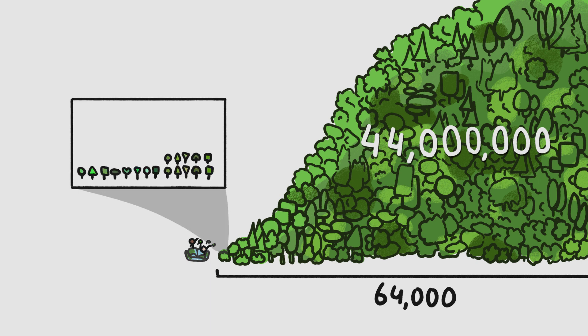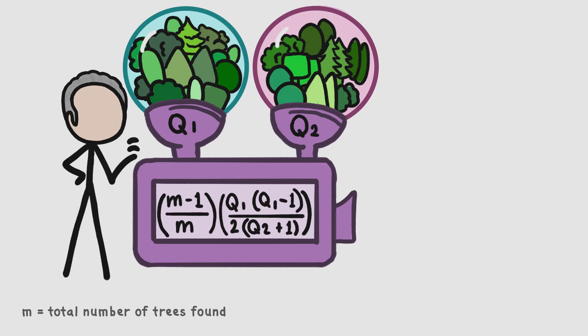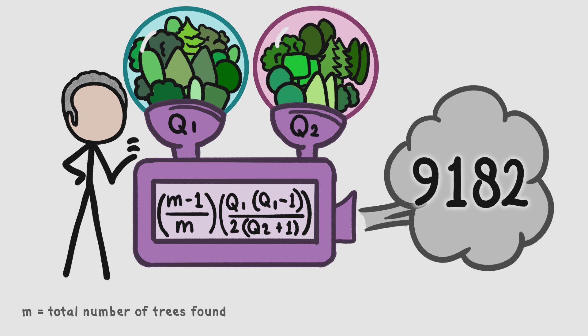They calculated how many species have been seen once versus twice. The researchers ran these numbers through the equations, and estimated that there are about 9,200 tree species out there that we haven't yet discovered.